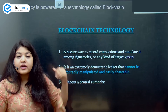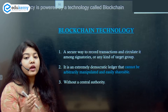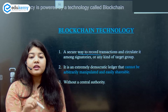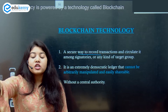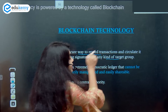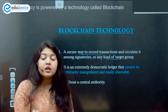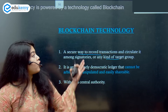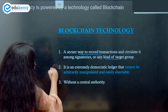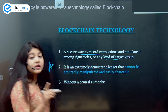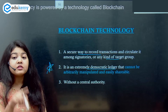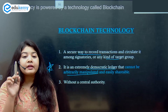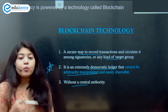Cryptocurrency uses blockchain technology. Blockchain technology is a secure way to record transactions and circulate them among the signatories — the people involved in blockchain transactions for a particular target group, such as cryptocurrency account holders. Most importantly, it is a democratic ledger: entries can be done by all participants, but no manipulation or changes can be made. It can be shared easily and operates without any central authority.